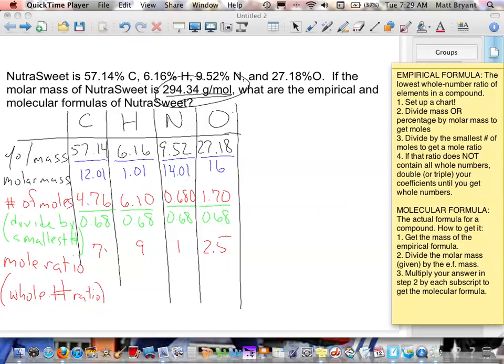Whenever we have something like this, the easiest thing to do is just to double it. So, I'm going to multiply all these by 2. I'm going to get a coefficient of 14 for carbon. I'll get a coefficient of 18 for hydrogen. I'll get a coefficient of 2, obviously, for nitrogen. And then a coefficient of 5 for oxygen.